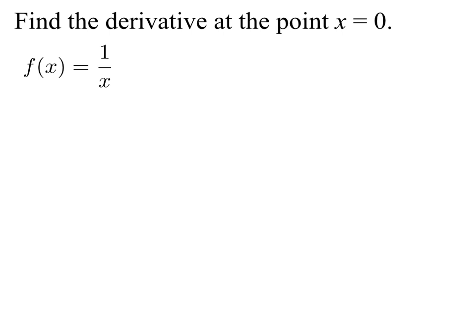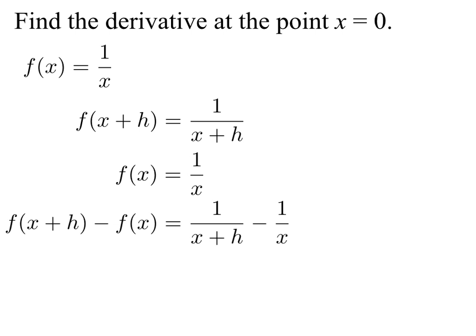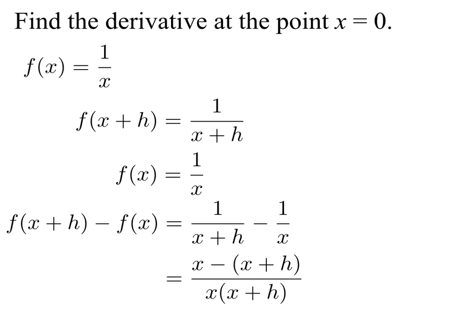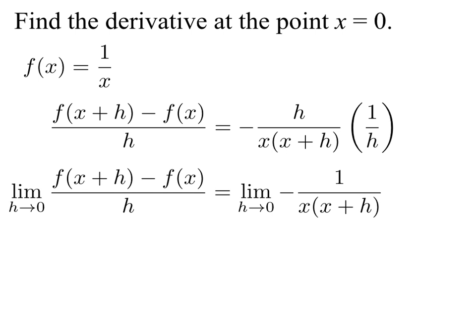Let's consider an example — find the derivative at the point x = 0. The first thing we do is compute the limit of the difference quotient. We need f(x+h), which in this case is 1/(x+h), and we know f(x) = 1/x. The difference is 1/(x+h) - 1/x, which requires a common denominator. That gives us [x - (x+h)] / [x(x+h)]. Collecting terms and simplifying we get -h / [x(x+h)]. Dividing by h, the h's cancel.